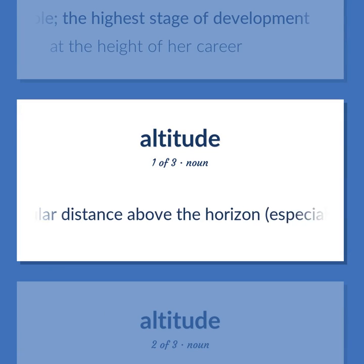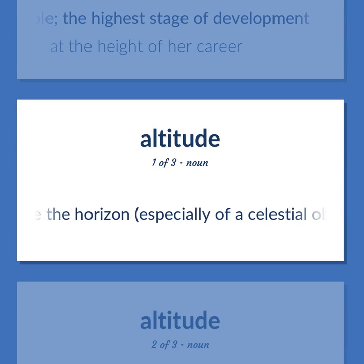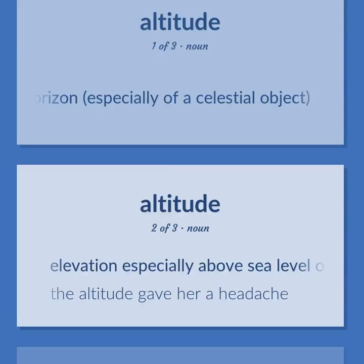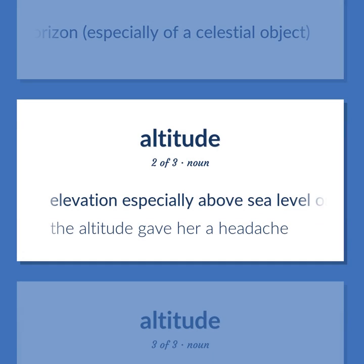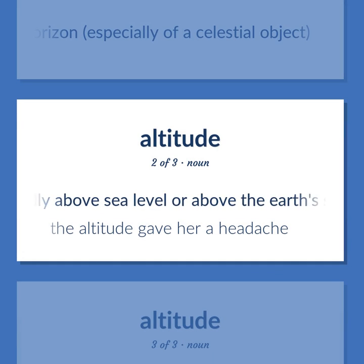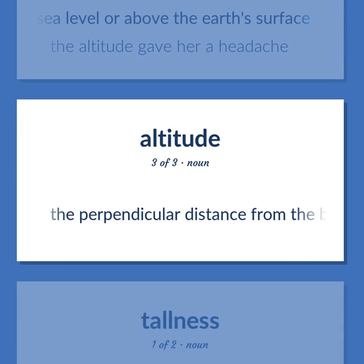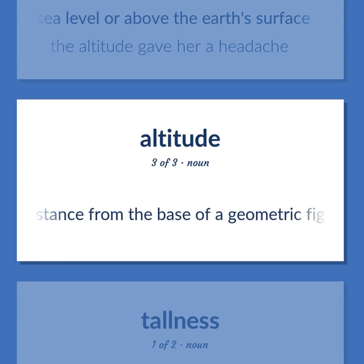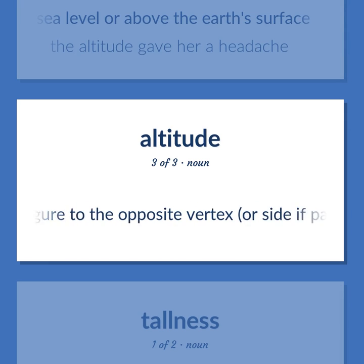Altitude. Angular distance above the horizon, especially of a celestial object. Elevation, especially above sea level or above the Earth's surface. Example: The altitude gave her a headache. Also: the perpendicular distance from the base of a geometric figure to the opposite vertex, or side if parallel.